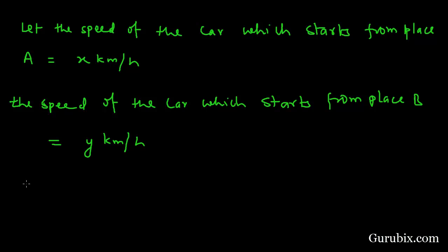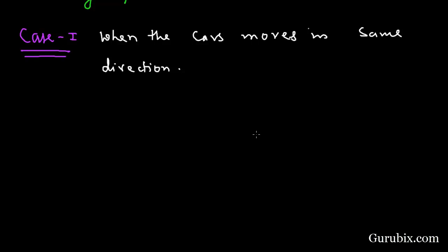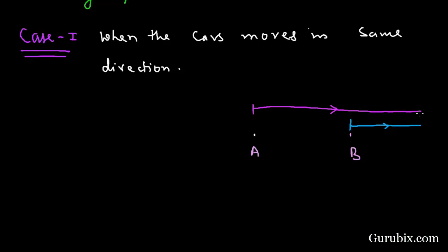Here are the two cases. In Case 1, when the cars move in the same direction: this is place A and this is place B. A car starts from place A and moves in one direction, and another car starts from place B and moves in the same direction. Suppose both cars meet at place C. The difference between A and B is 100 kilometers.